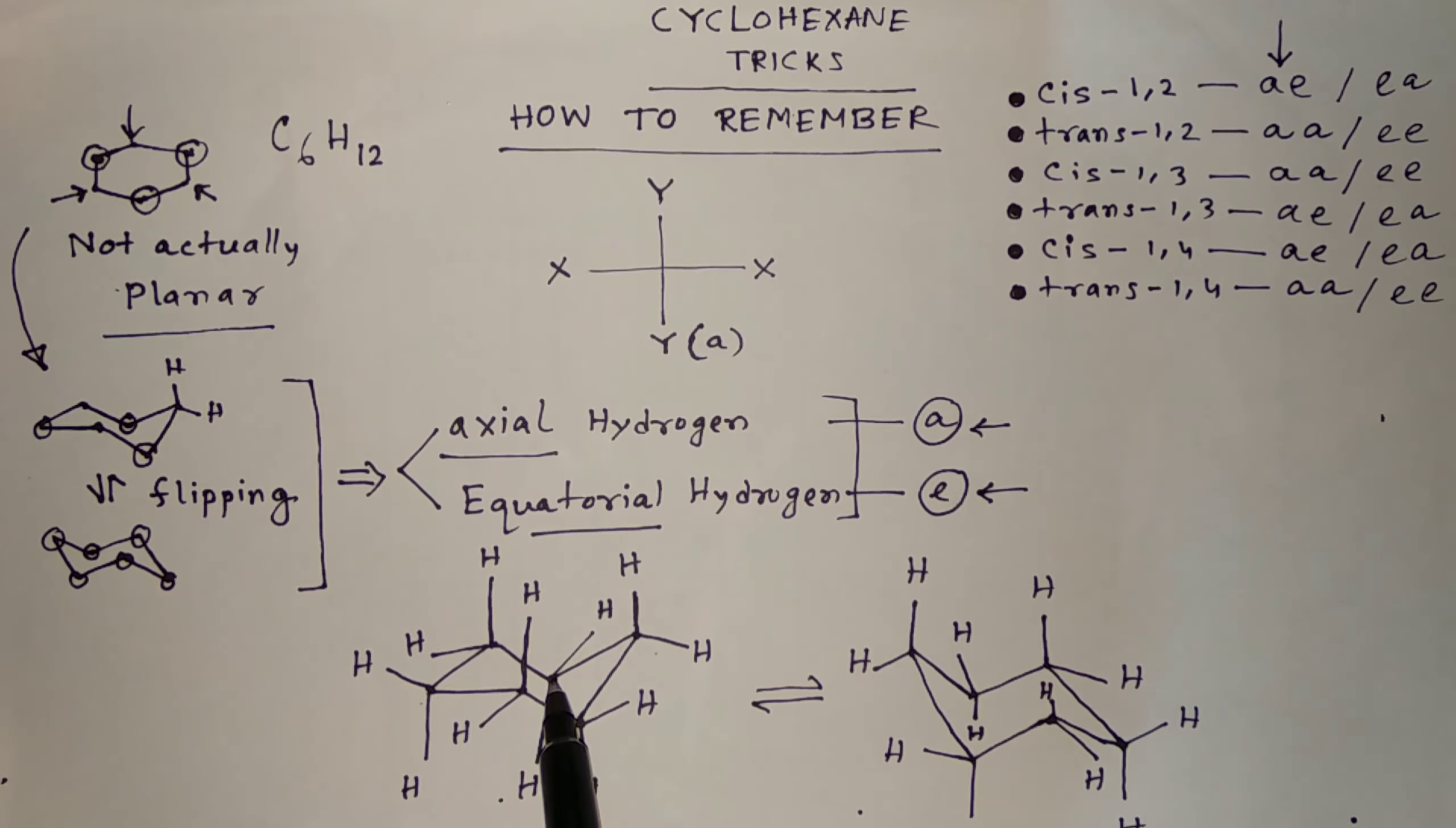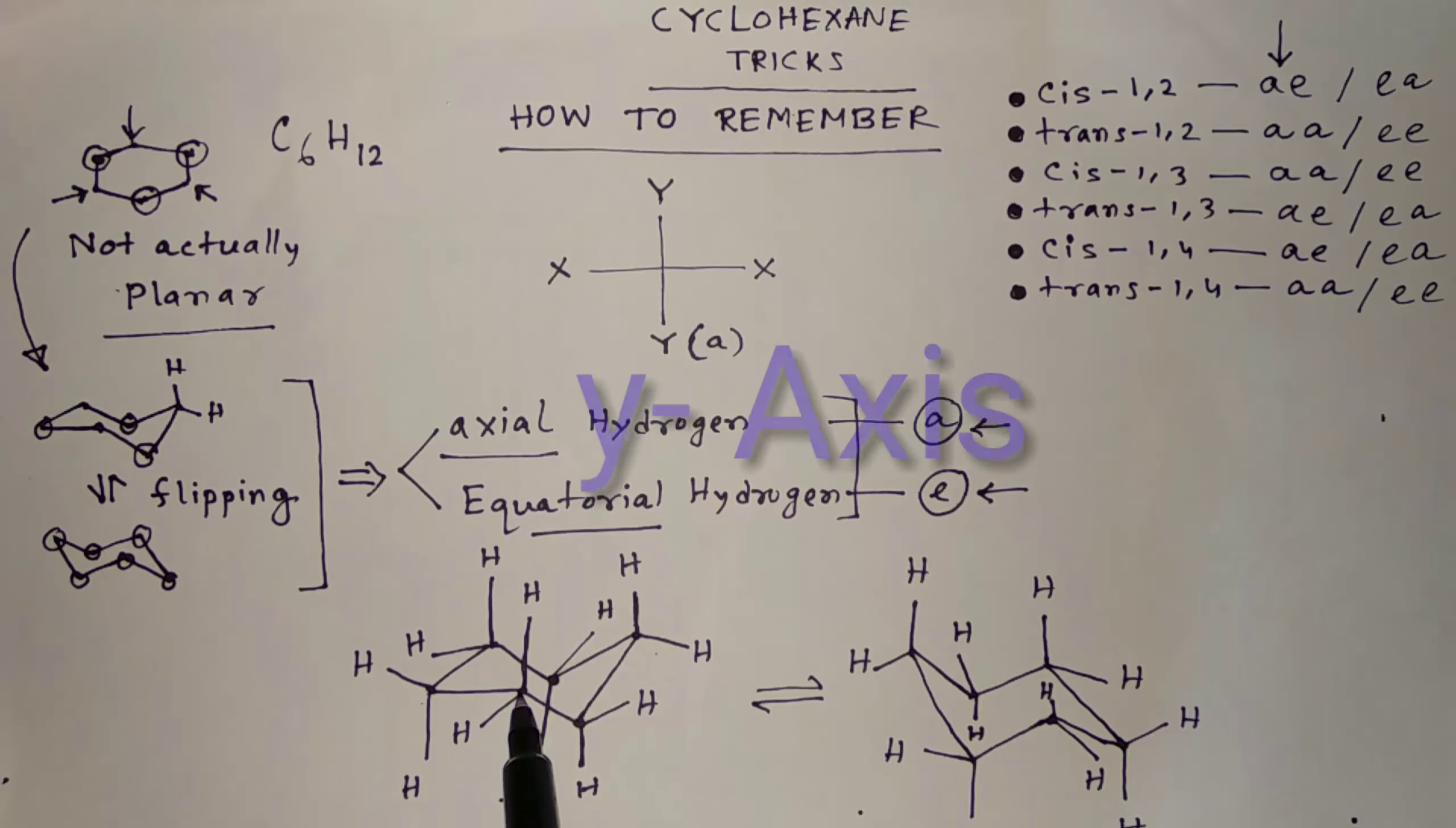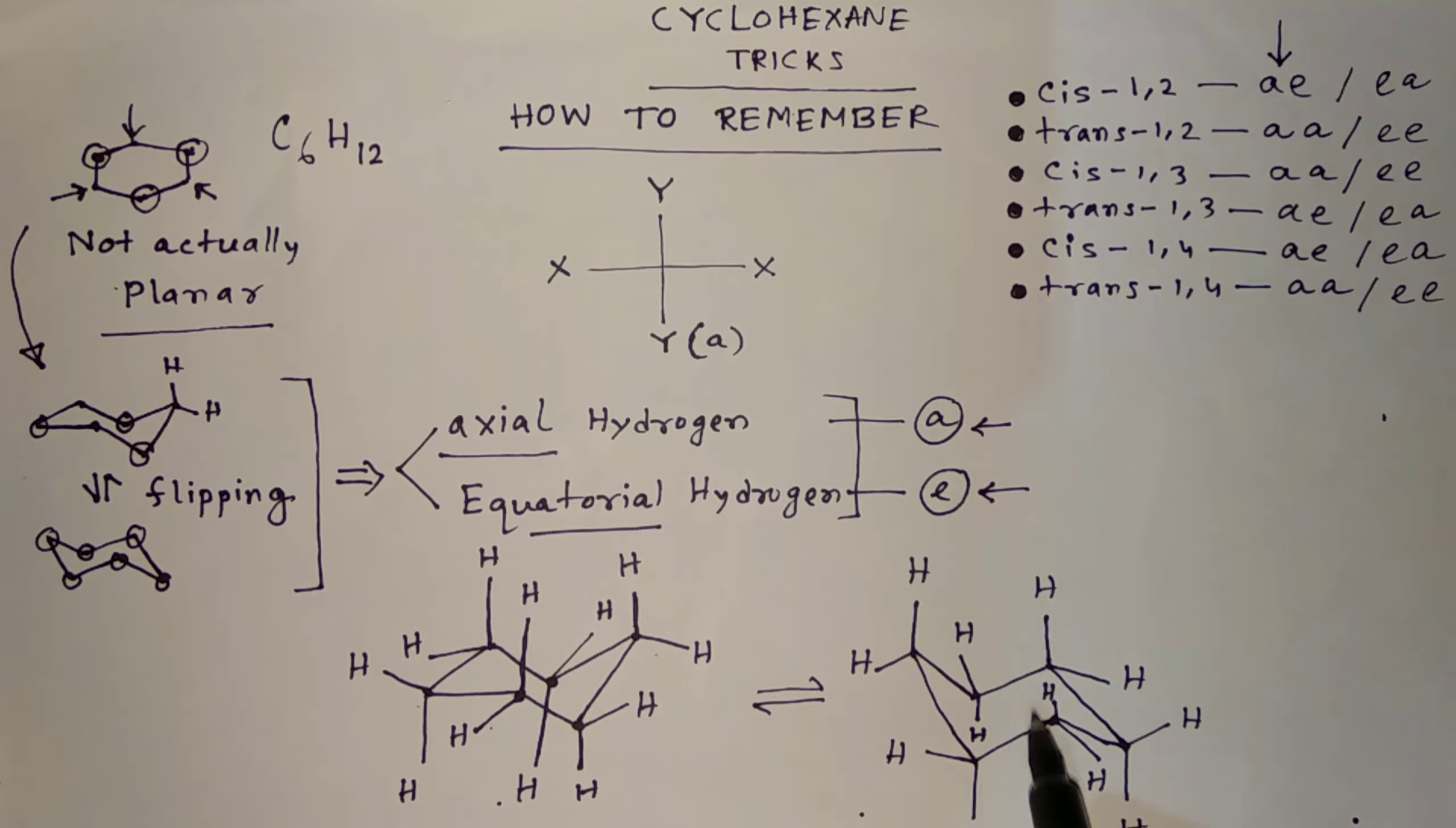Now coming to these carbons. From this carbon, you need to draw towards the corner carbon. This will be along the Z axis and also from this carbon, you need to draw like this, this way, in this way. So here will be equatorial hydrogens. Same is true for this system also.